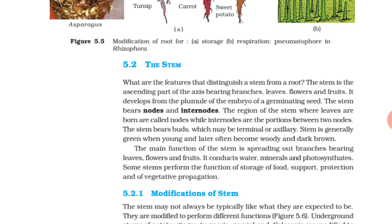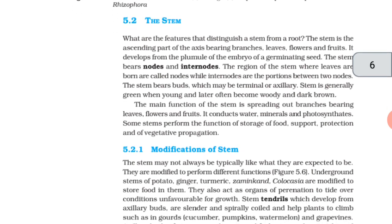The main function of the stem is spreading out branches bearing leaves, flowers, and fruits. It conducts water, minerals, and photosynthates. Some stems perform the function of storage of food, support, protection, and of vegetative propagation.